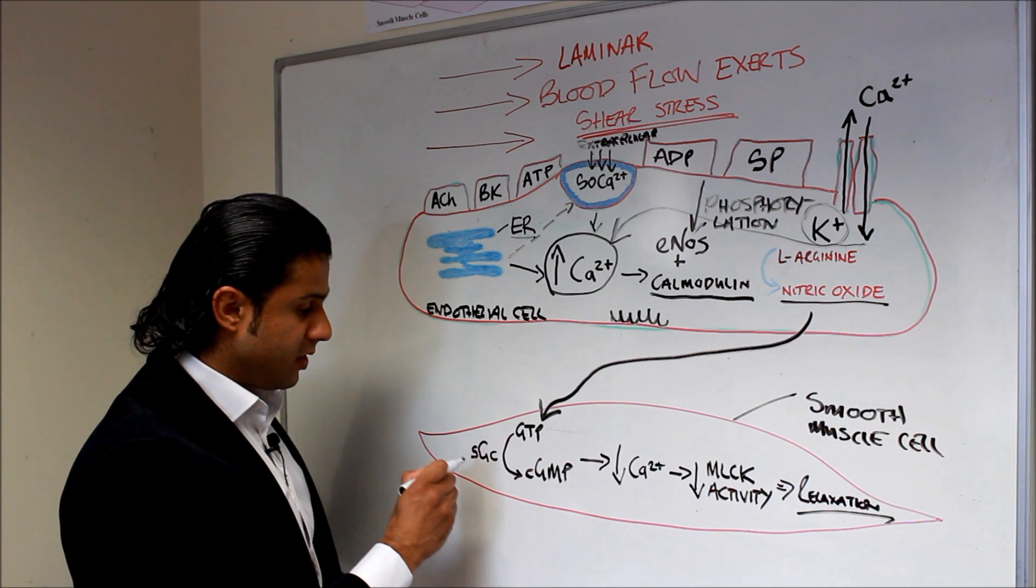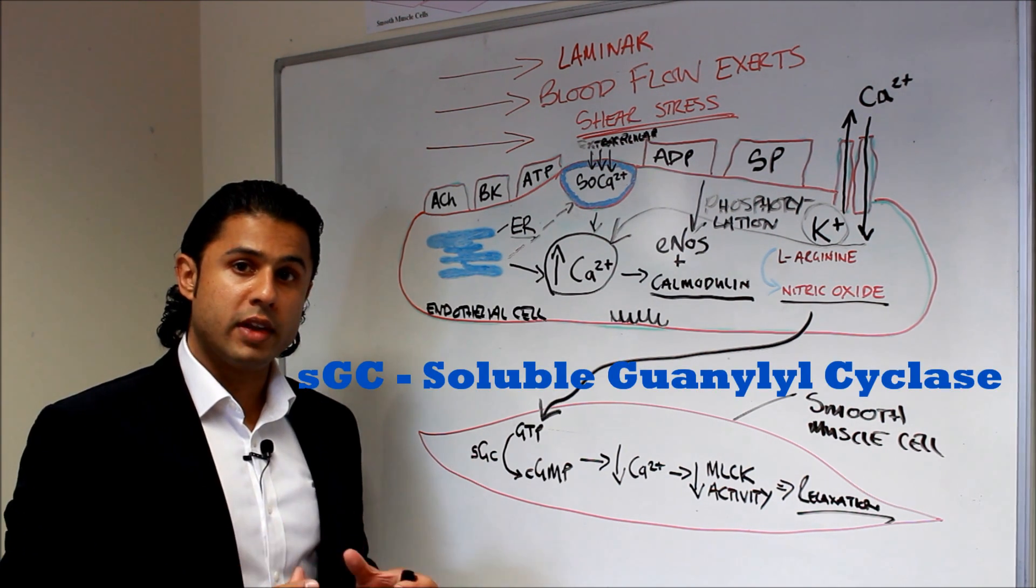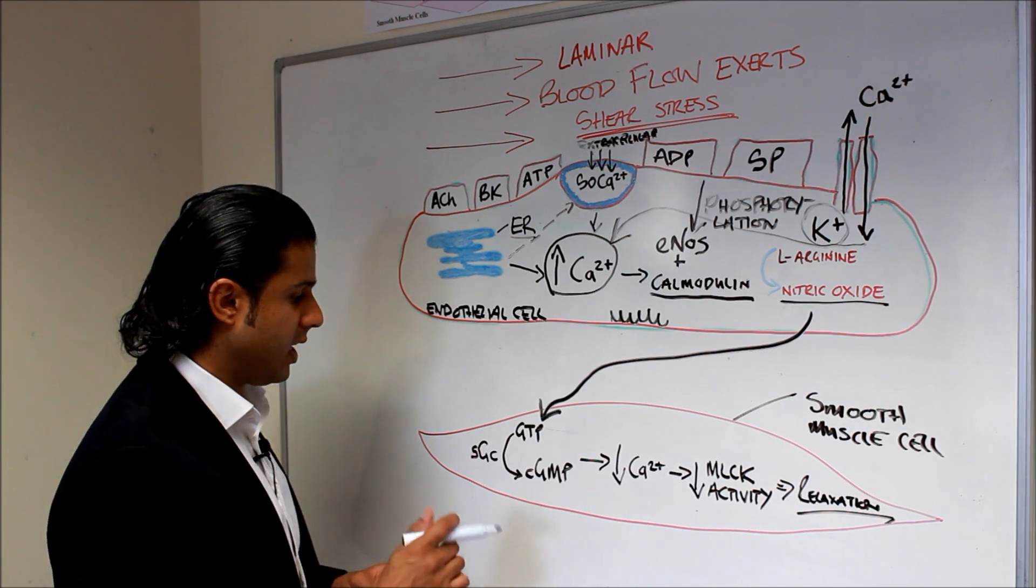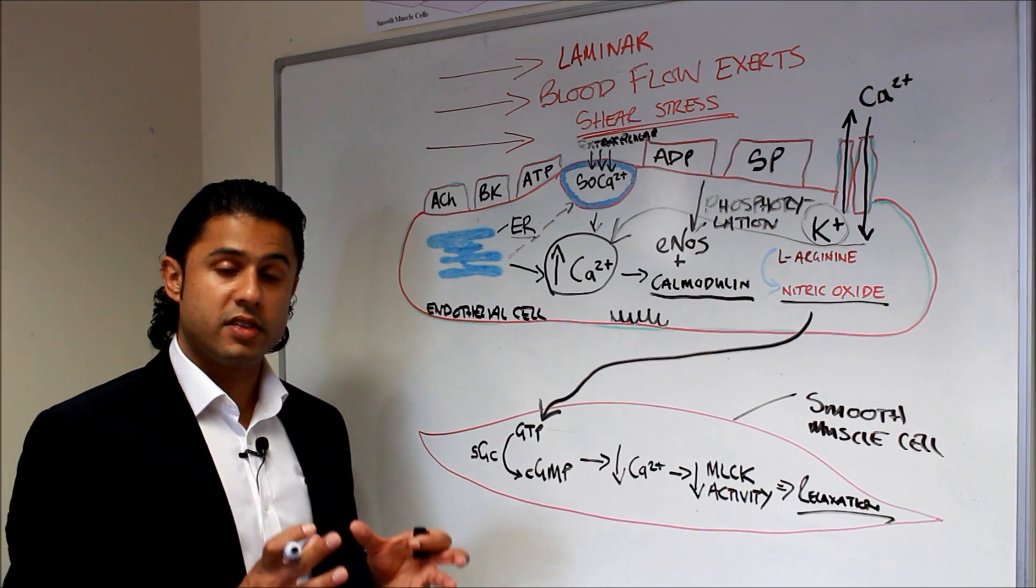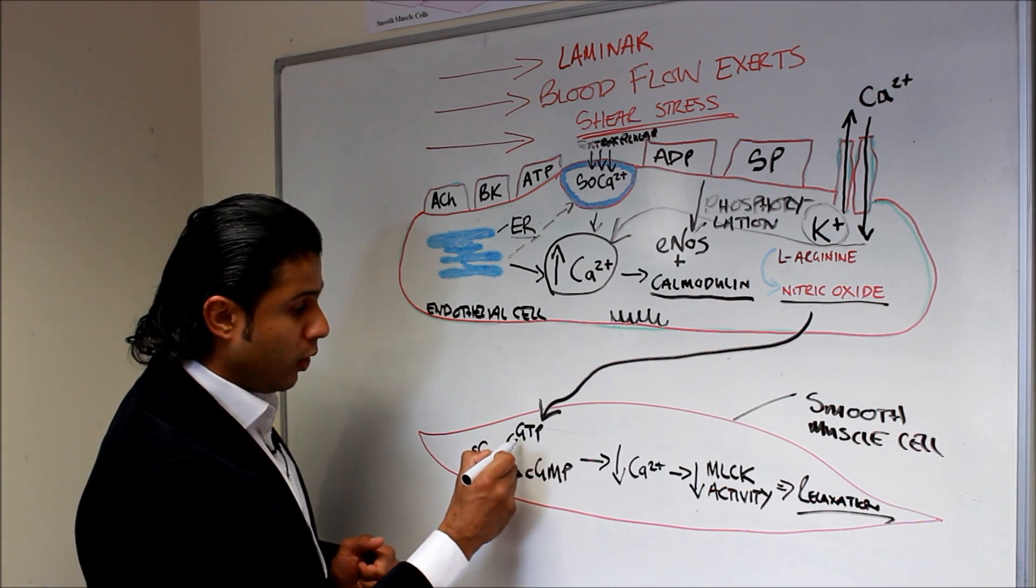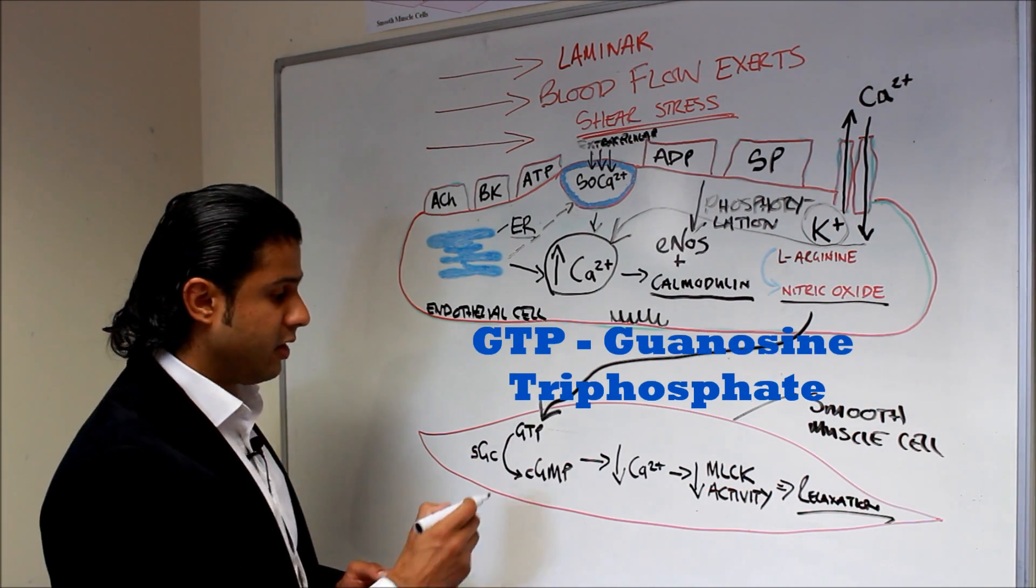Now what we've actually got is an enzyme called soluble guanylyl cyclase. Soluble guanylyl cyclase is an enzyme which converts or increases the rate of reaction of guanosine triphosphate into the second messenger cyclic guanylyl monophosphate.